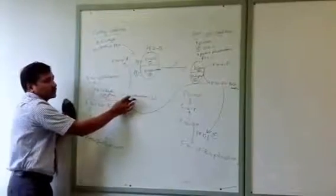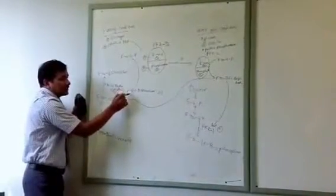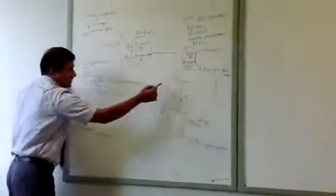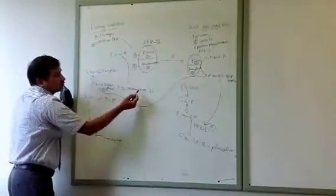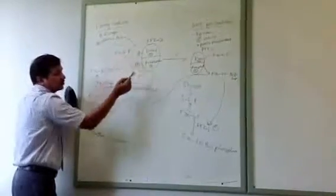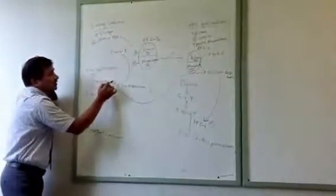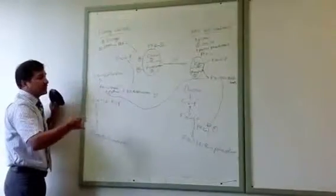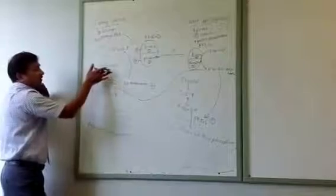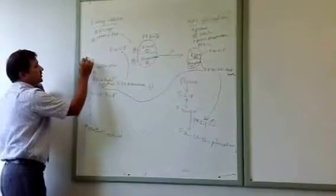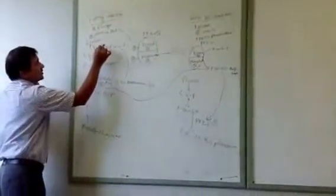What is the effect of decreased fructose 2,6 bisphosphate on fructose 1,6 bisphosphatase? Fructose 2,6 bisphosphate has a negative influence on fructose 1,6 bisphosphatase. In fasting, more fructose 2,6 bisphosphate is converted back to fructose 6 phosphate, so its concentration decreases. When its concentration decreases, its negative influence on fructose 1,6 bisphosphatase is removed, and the enzyme becomes free and active.